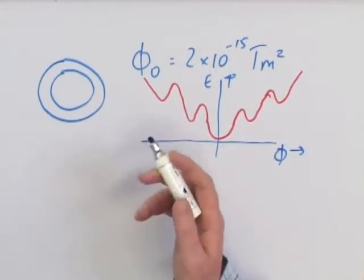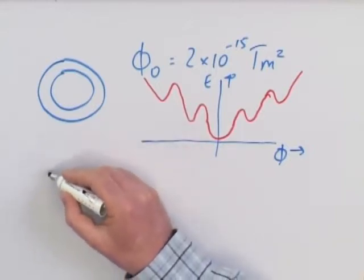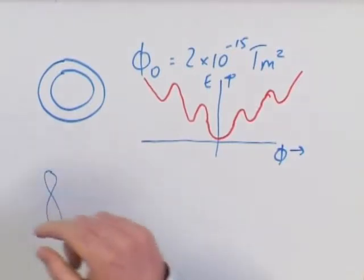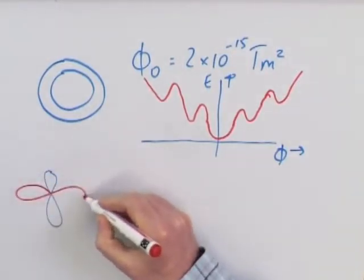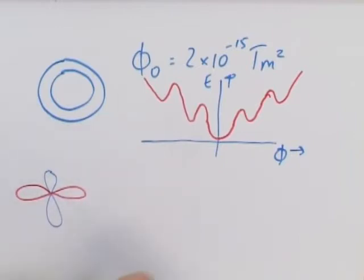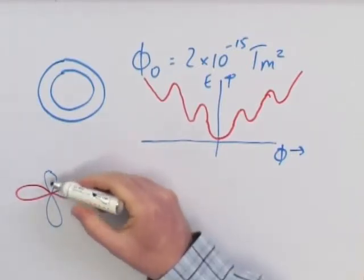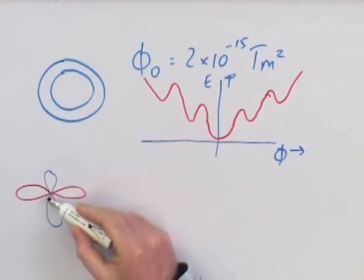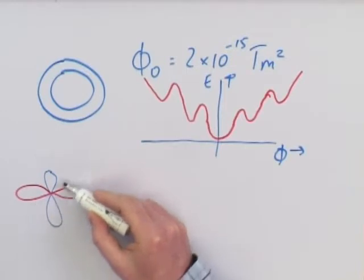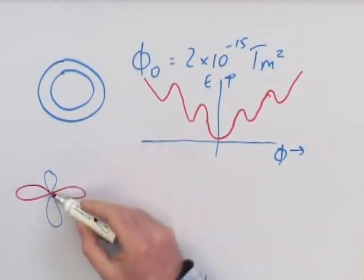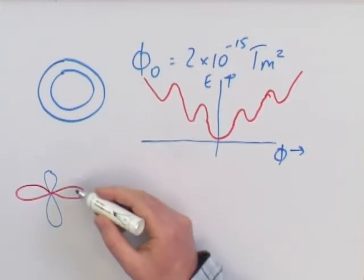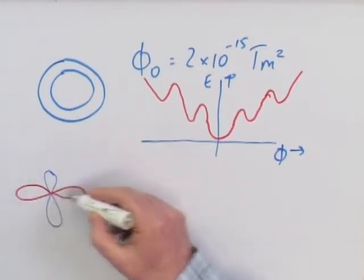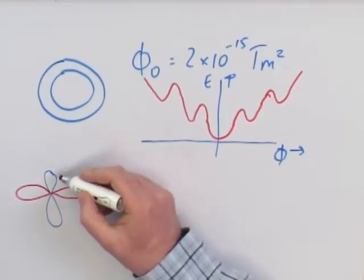In high-temperature superconductors, it's now well accepted that the symmetry is the so-called D-wave symmetry. If you look from the top to the copper-oxygen planes, superconductivity is very strong along the copper-oxygen bond directions, and it goes to zero in the so-called nodal directions, which is the 1-1-0 direction, the diagonals in the copper-oxygen planes. The amplitude varies for different directions in the copper-oxygen plane, but also the phase varies.